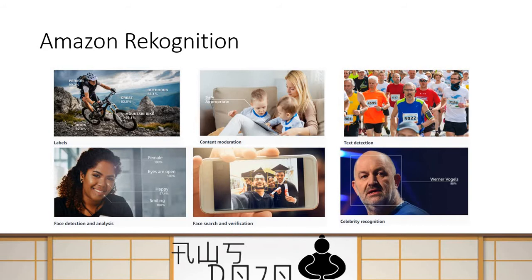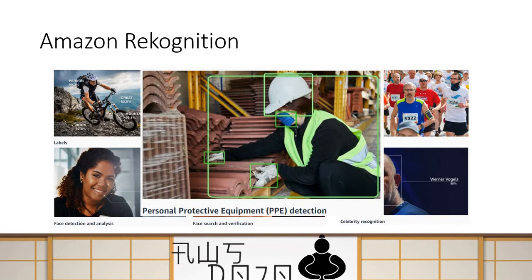You can also do celebrity recognition. If you take a picture of a celebrity and want to identify them, Amazon Rekognition can do celebrity identification as well. It was recently announced that Amazon Rekognition also does personal protection equipment detection — so if someone in a picture is using protective equipment, it can detect that equipment. These are the various analyses of videos and images that Amazon Rekognition can perform.